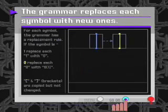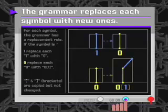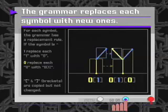Earlier, we discussed how the grammar substitutes or replaces facts to change the description of each branch part. The program applies the grammar to the symbols 1 and 0, and the left and right brackets, to change the description of the branch parts. For each symbol, the grammar has a replacement rule. If the symbol is a 1, replace it with a 0. If it's a 0, replace it with a 0 and a 1 enclosed in brackets. The brackets are copied, but they're never changed.